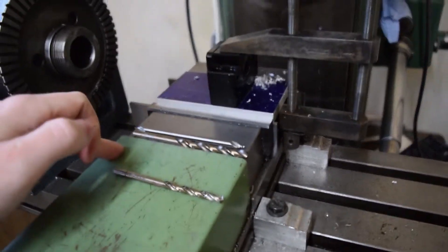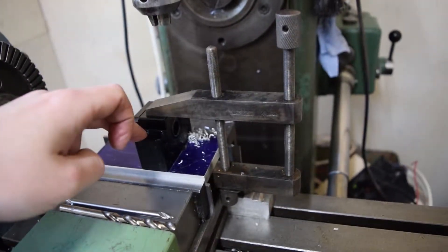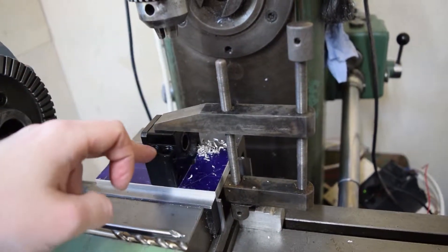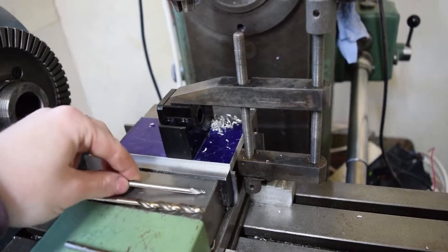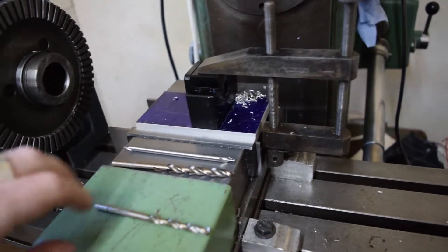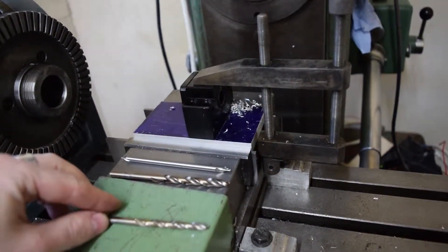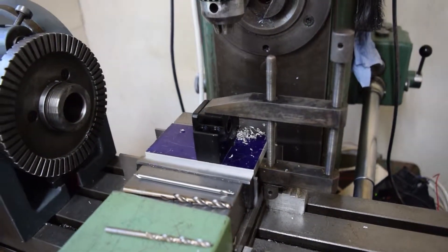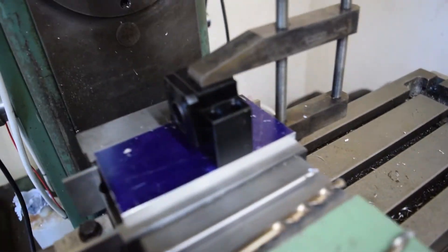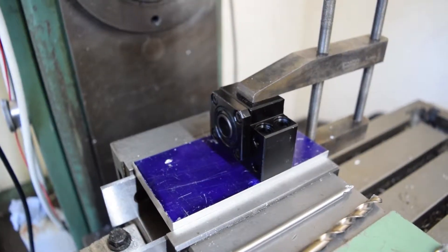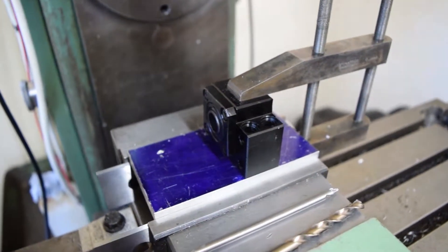I'm using a 6mm drill to locate, then spotting with a longer center and change that out for tapping size for M6, which is going to be M6 bolt holes. This is one of the bearing brackets for the ball screws.